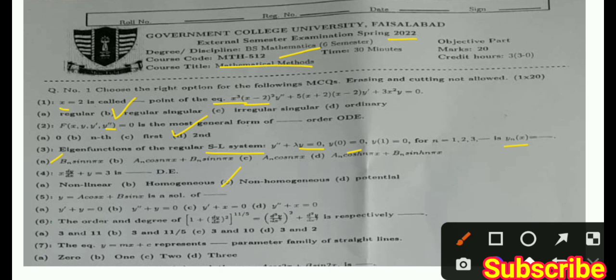MCQ 5: y = a·cos(x) + b·sin(x) — we have to identify which differential equation has this as a solution. The answer is y'' + y = 0. That is the correct option.